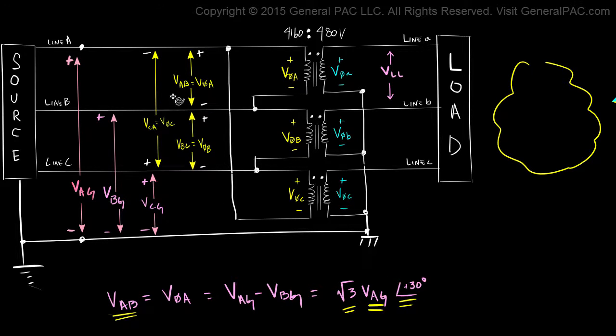Now let's just label these in our phasor diagram. So remember, VAB is equal to V phase A. VBC is equal to V phase B. And VCA is equal to V phase C on the high voltage side.